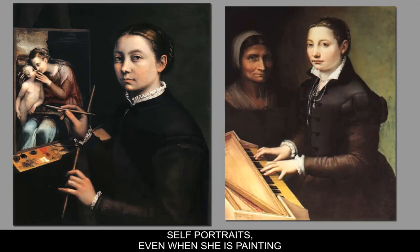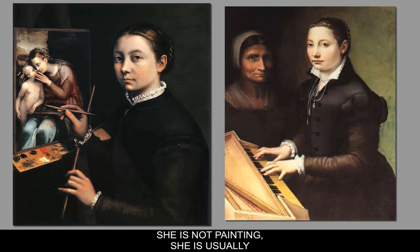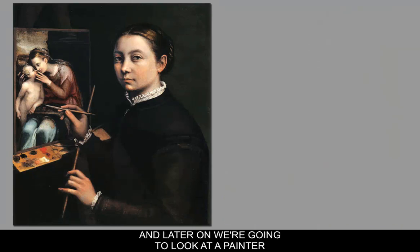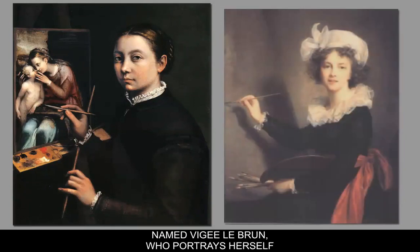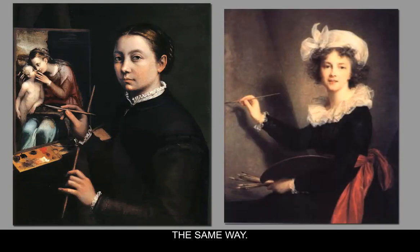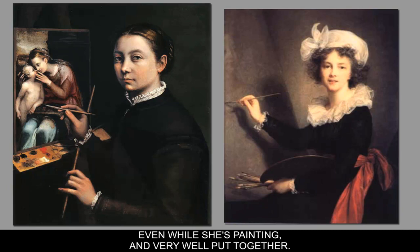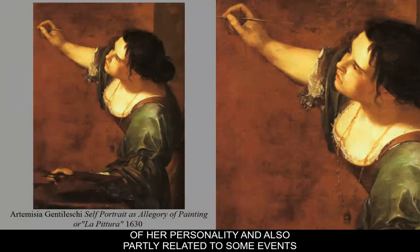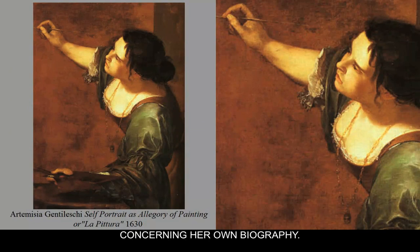This is a little different from other portraits we'll look at. For instance, Sofonisba Anguissola's self-portraits — even when she is painting — show her very much put together, very attractive, and not disheveled at all. Later on we'll look at a painter named Vigée-Lebrun who portrays herself the same way — making herself very beautiful even while painting. Artemisia chooses not to, and I suspect this is part of her personality and partly related to some events concerning her own biography.